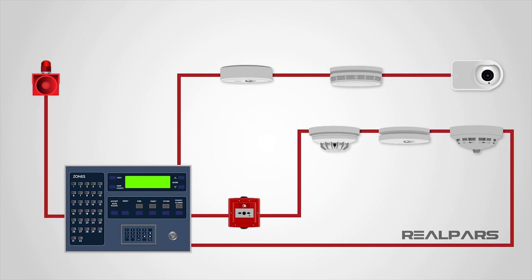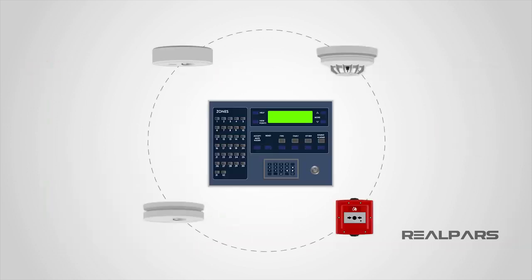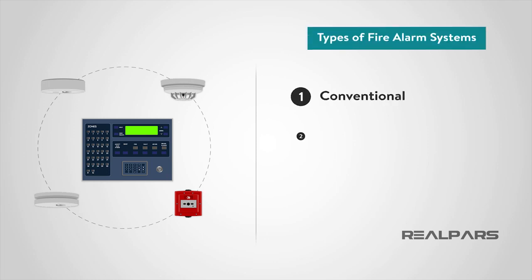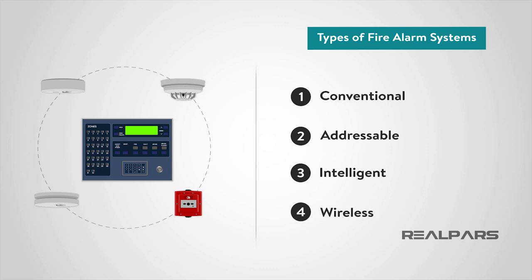A manual call point, or break glass call point, is a device which enables personnel to raise the alarm by breaking the frangible element on the fascia, which then triggers the alarm. Fire alarm systems can be broken down into four main types: conventional, addressable, intelligent fire systems, and wireless systems. Let's spend some time considering each.